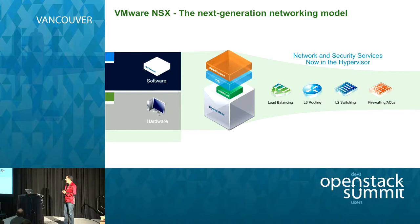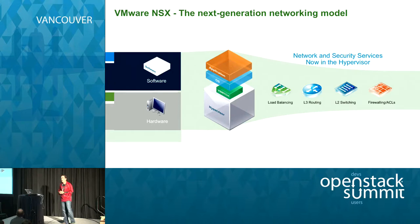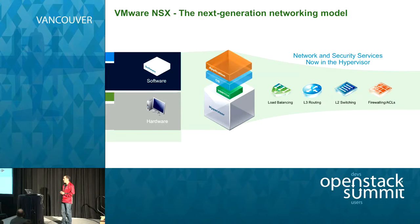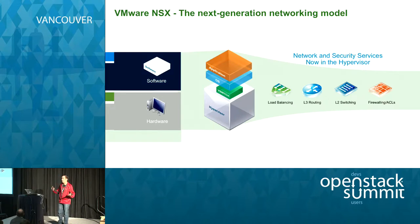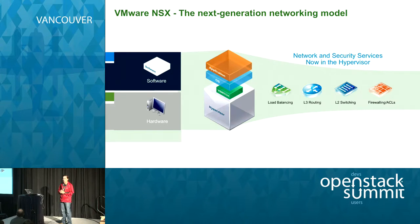The idea behind NSX is that we have promoted to software the networking services required for workloads that were typically offered in hardware. If you need layer 2 through layer 7 services for your applications, in the traditional provisioning model this requires changes and configuration in physical switches, routers, load balancers, etc. With NSX we promote all these network services to software — we call this virtual networks — and now services can be instantiated via API calls.